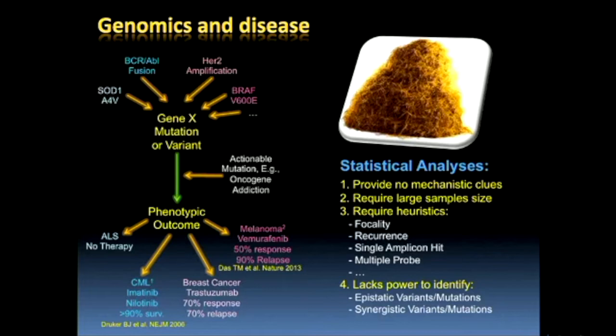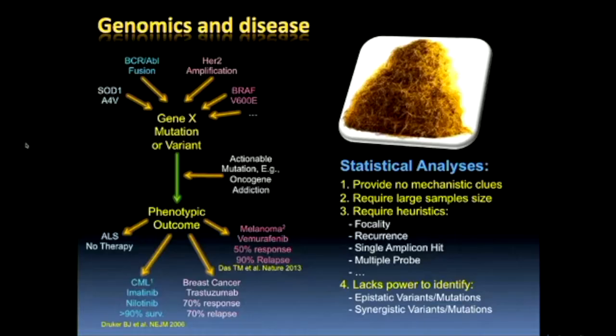Oncogene addiction is the fact that cancer cells with mutations in oncogenes tend to be addicted to the activity of those oncogenes. Unfortunately, CML turns out to be more the exception than the rule. As we're starting to elucidate more and more mutations in cancer, it's becoming increasingly harder to discover mutations that are truly targetable and at very high frequency in the population.